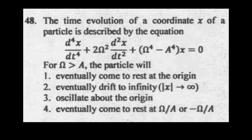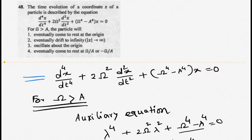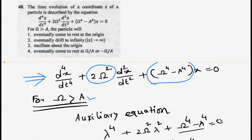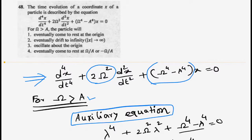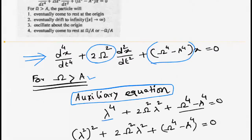Let us see how to solve this differential equation. I have written the differential equation here — the same equation — with the condition ω greater than a. This is a linear fourth-order differential equation with constant coefficients, so it has an auxiliary equation. The auxiliary equation is λ⁴ + 2ω²λ² + (ω⁴ − a⁴) = 0, where the first term corresponds to d⁴x/dt⁴ and the middle term to d²x/dt².